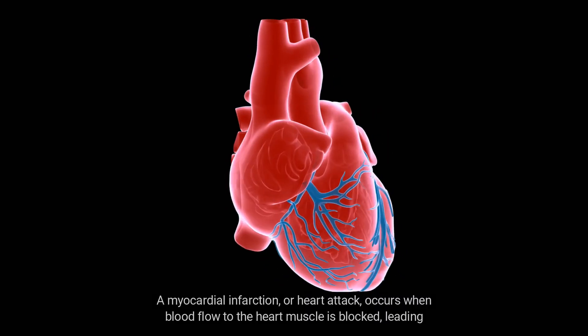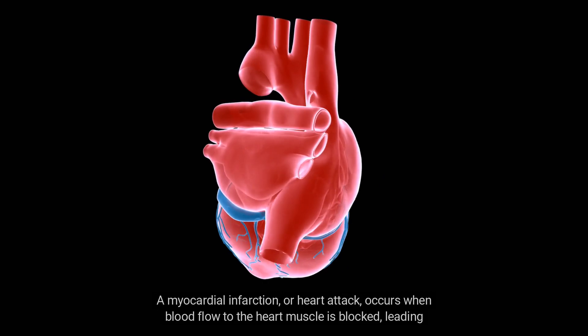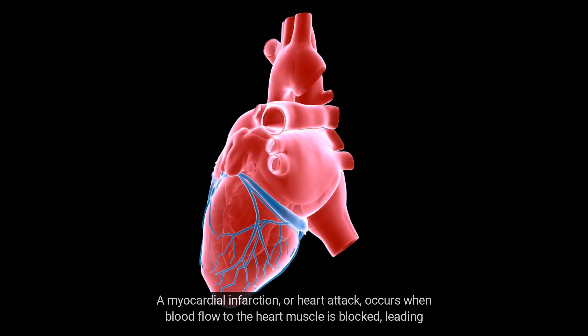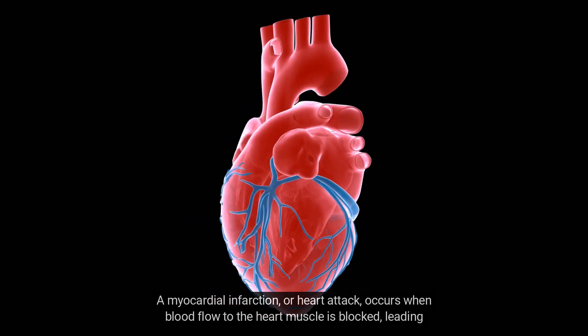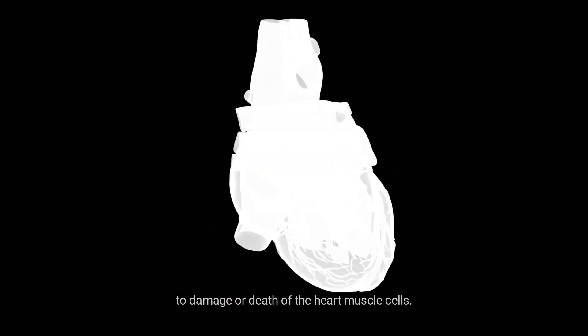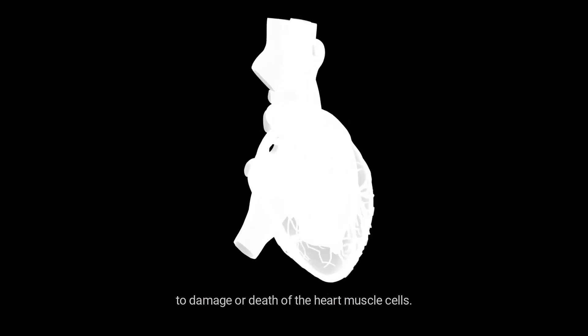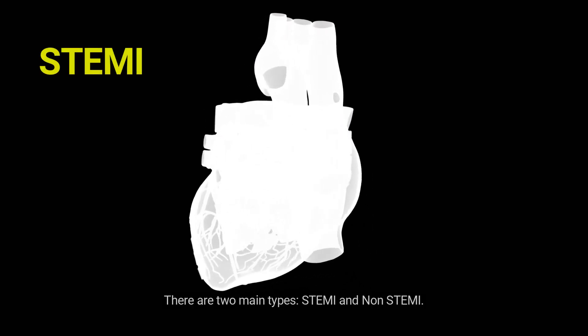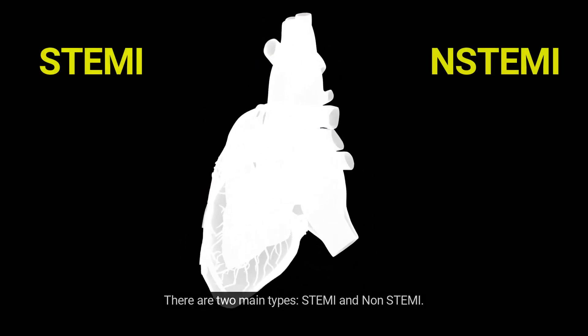A myocardial infarction, or heart attack, occurs when blood flow to the heart muscle is blocked, leading to damage or death of the heart muscle cells. There are two main types: STEMI and non-STEMI.